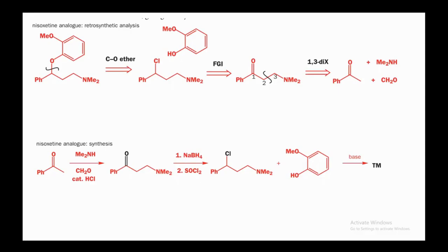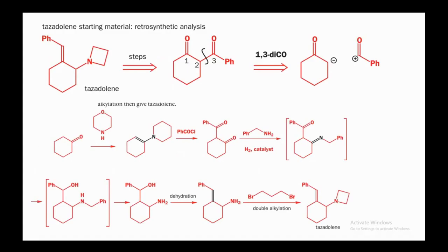For a 1,3-dicarbonyl compound: disconnect between positions 2 and 3 to assign negative charge on one side and positive charge on the other. Apply the enamine synthetic strategy — react the ketone with a secondary amine to generate an enamine, then react with an acid chloride to give the 1,3-dicarbonyl product. React with primary amine (for imine formation with the ketone) and reduce with H2 catalyst.